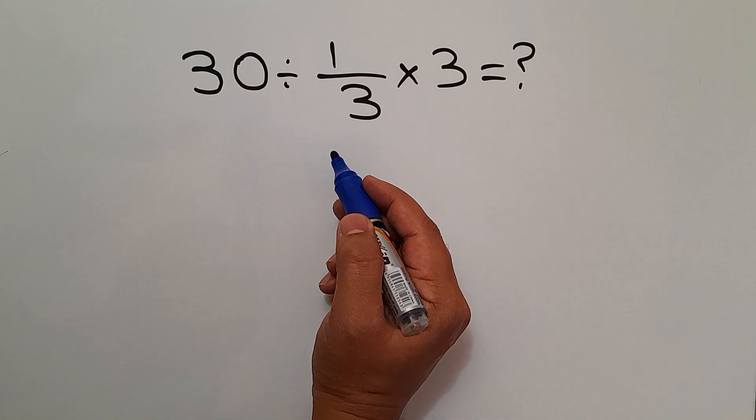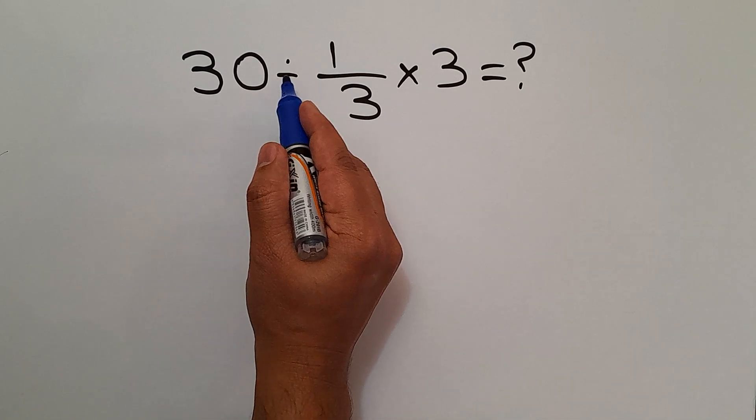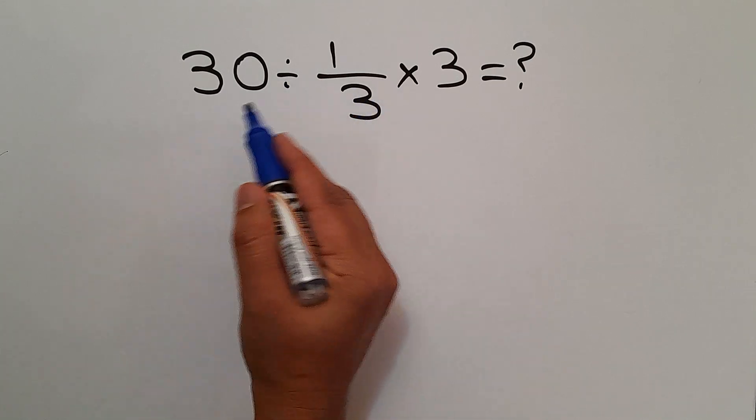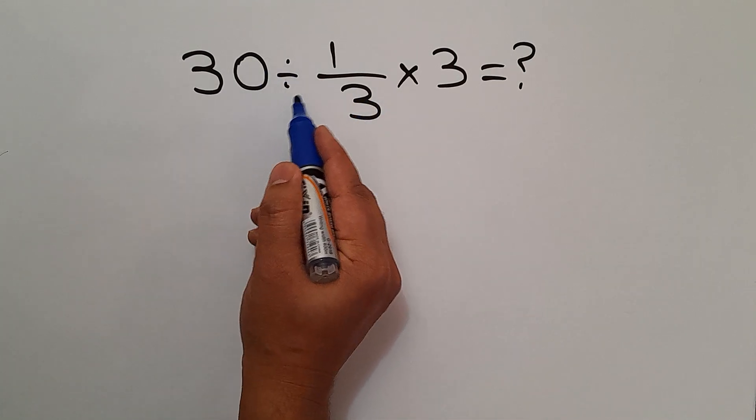As we know, according to the order of operations, multiplication and division have equal priority and we have to work from left to right. So first this division.